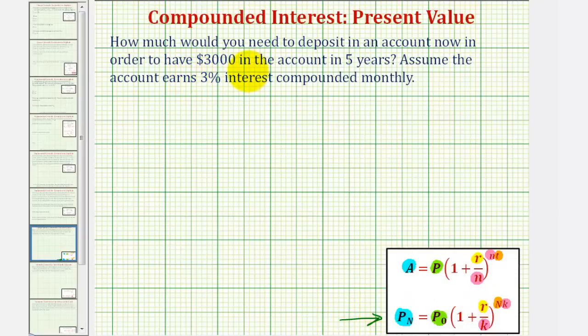Because we want $3,000 in the account in five years, P sub capital N would be P sub five which is equal to $3,000. Capital N, the number of years, is equal to five. The interest is three percent, so R is equal to three percent.